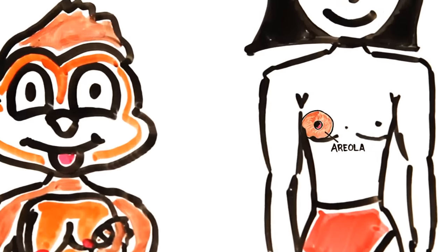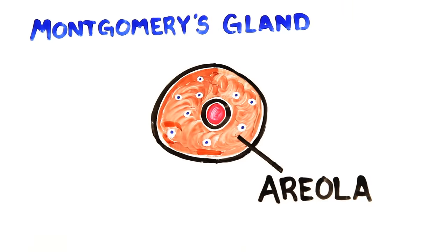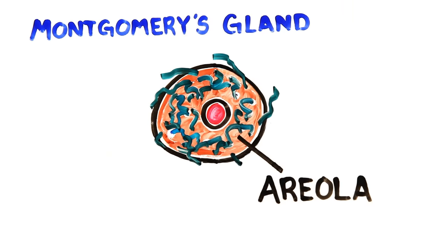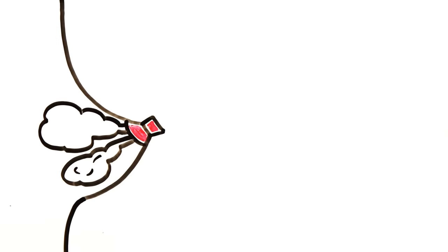The ring of pigmented skin surrounding the nipple is called the areola, which is covered in little bumps called Montgomery's gland. While lactating, the glands make oily secretions that keep the nipple lubricated and may also release compounds to make the nipple seem yummy for a baby. The nipple isn't composed of a single orifice, but has many tiny holes you cannot see with the naked eye.